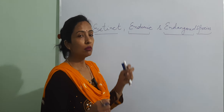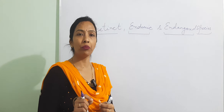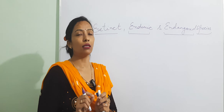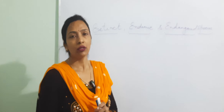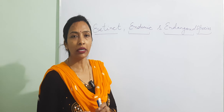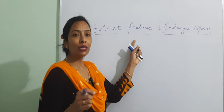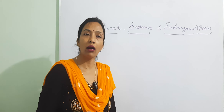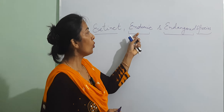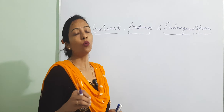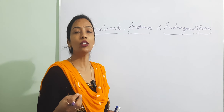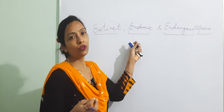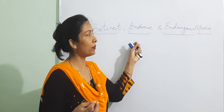Endemic species — these are those plants and animals which are particularly found in one area. Such animals or plants will only be found in one special place and nowhere else, for example the giant squirrel, which you will find in Pachmarhi Biosphere Reserve.